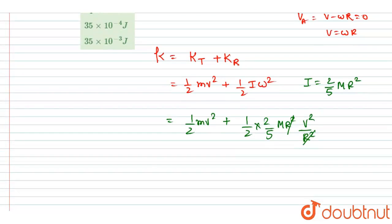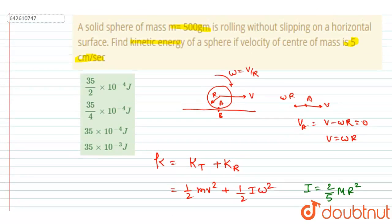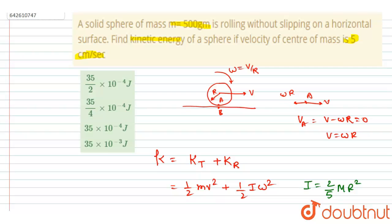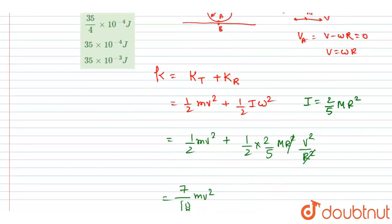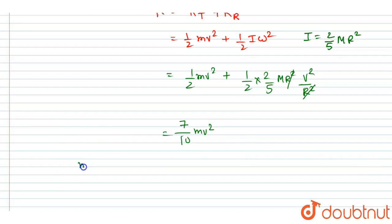So this will get cancelled out. So you will write 2 by 10 plus 5 by 10. You can write, half is 5 by 10. So you will get 7 by 10 mv squared as the total kinetic energy. Now in the equation, mass is given as 0.5 kg...